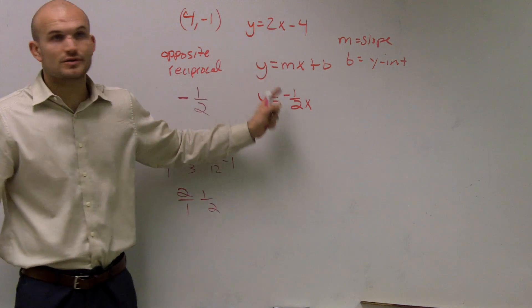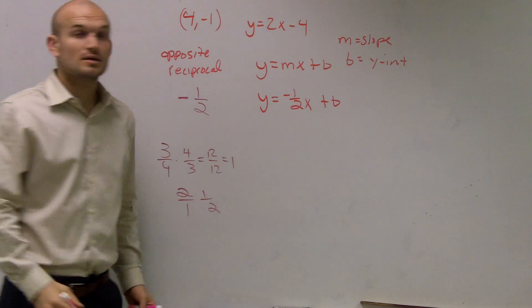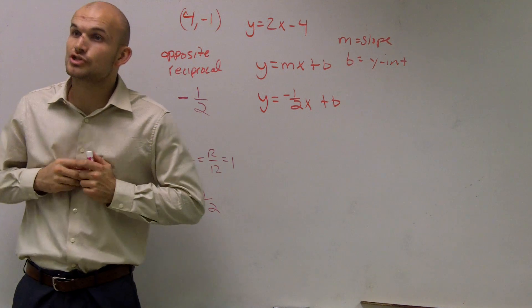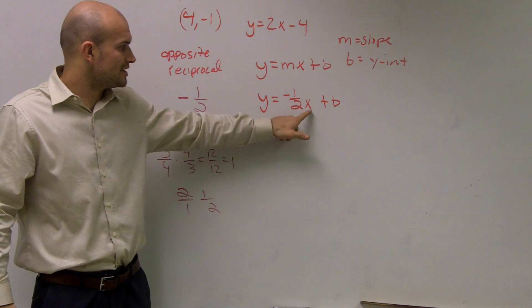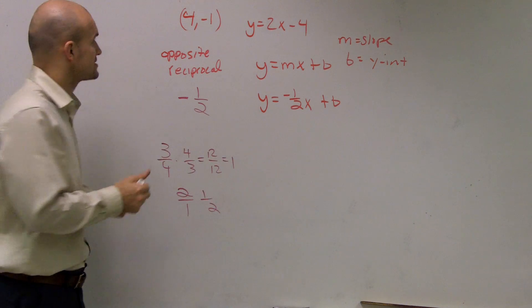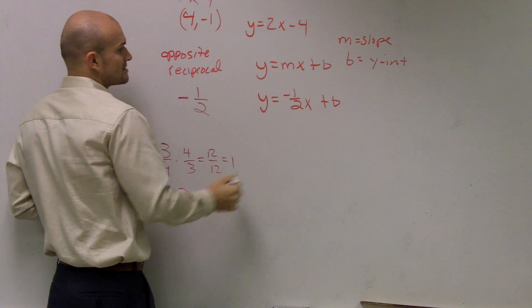Now, all I did was find a new slope. I did not find my y-intercept b. So I still need to determine what my y-intercept is going to be. I know that I can use x and y coordinate points. If I plug in an x and y point, I can find out what b is.